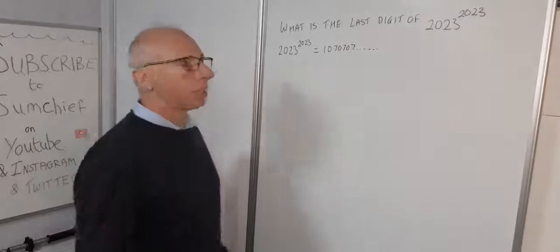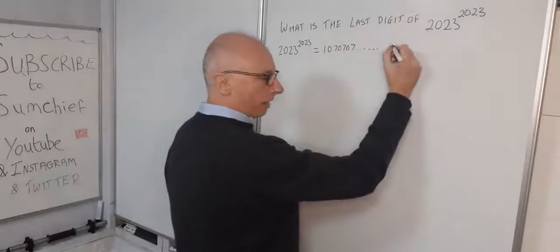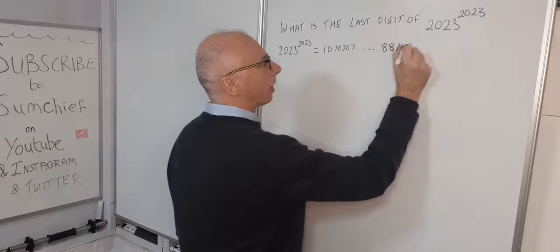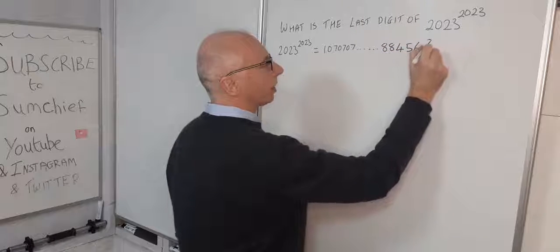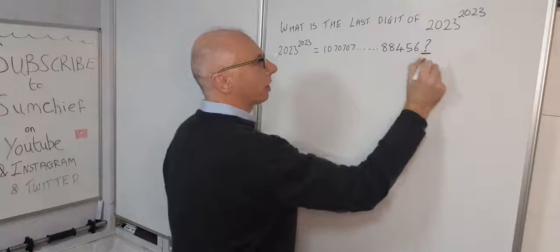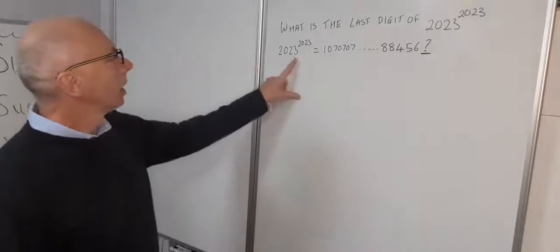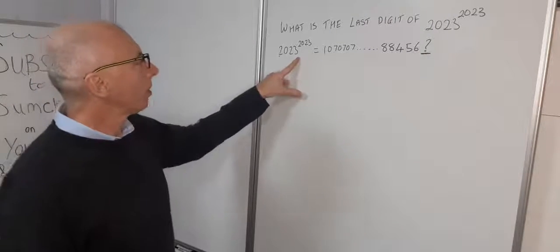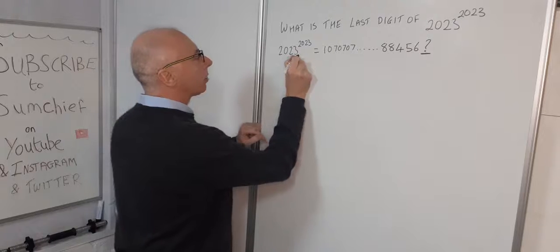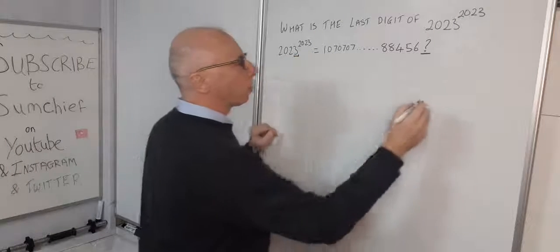and a load of digits, and then it's 88456 and some digit here. So what we do now is take 3 to the power of a number. We take this 3 and draw up a little table.